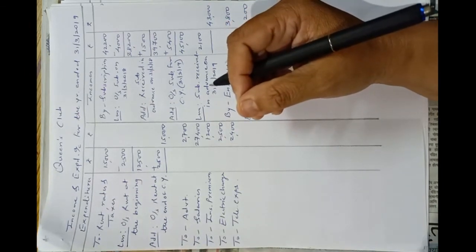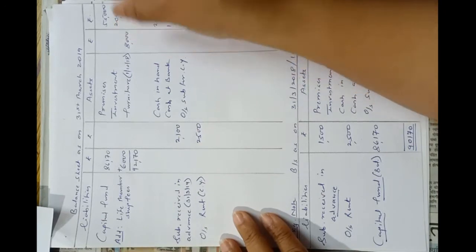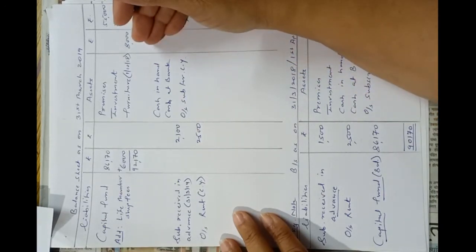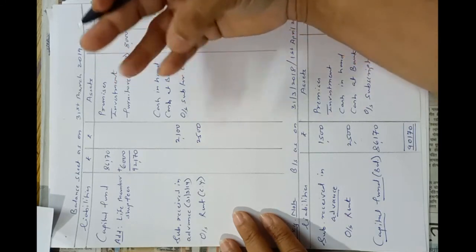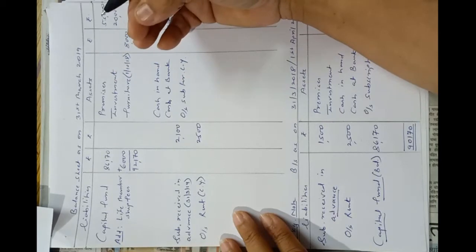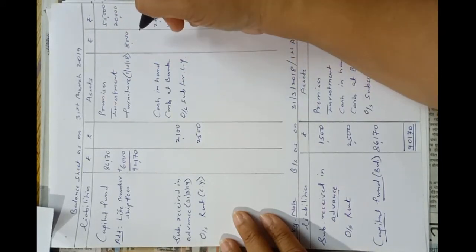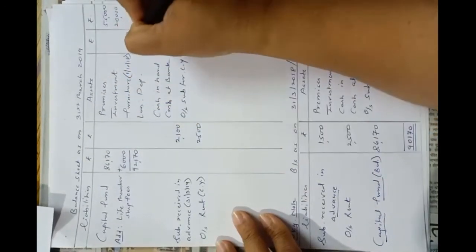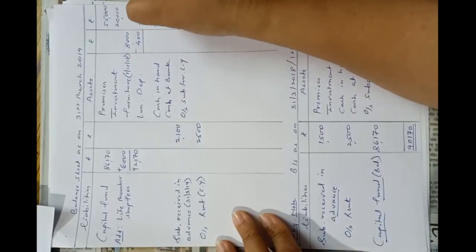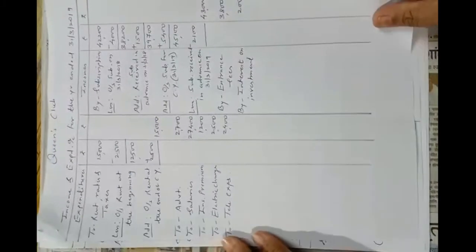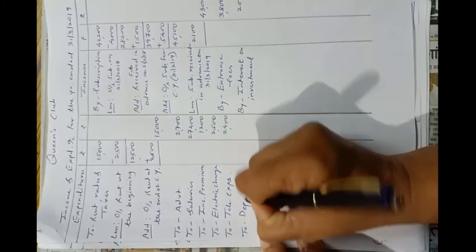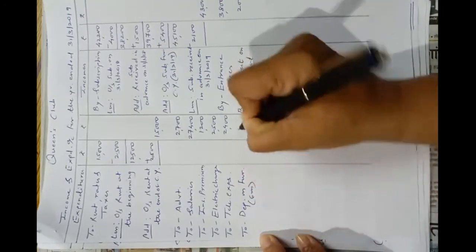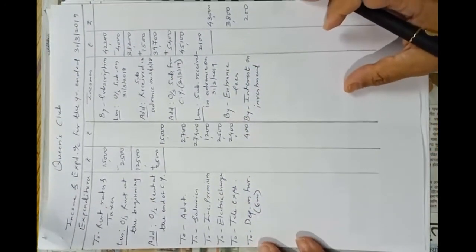There is also an adjustment of depreciation at 10% per annum. Furniture Rs.8,000 × 10% = Rs.800, but it was purchased on 1st October 2018, so depreciation is for six months only (October to March). Full year depreciation is Rs.800, so six months depreciation is Rs.400. Less depreciation on furniture for six months: Rs.400. Second posting: depreciation on furniture for six months Rs.400.